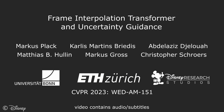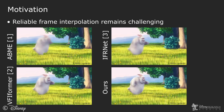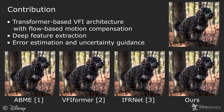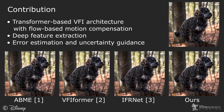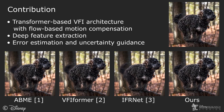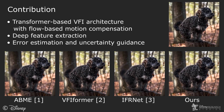We present our work Frame Interpolation Transformer and Uncertainty Guidance. Despite great progress in frame interpolation research, reliable frame interpolation that can handle difficult effects such as complex lighting and large motion remains challenging. We propose an architecture based on transformers that uses optical flow for effective motion compensation, as demonstrated in this example. Bundled with our deep feature extraction, we achieve state-of-the-art performance on a wide variety of datasets.